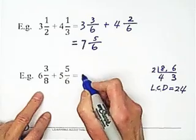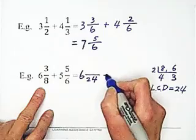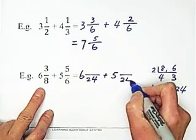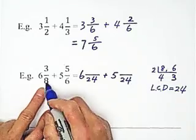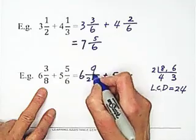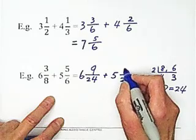Okay, so write the fraction. 6 over 24 plus 5 over 24. From 8 to 24, multiply 3, so multiply 3 to the top. From 6 to 24, multiply 4, so multiply 4 to the top.